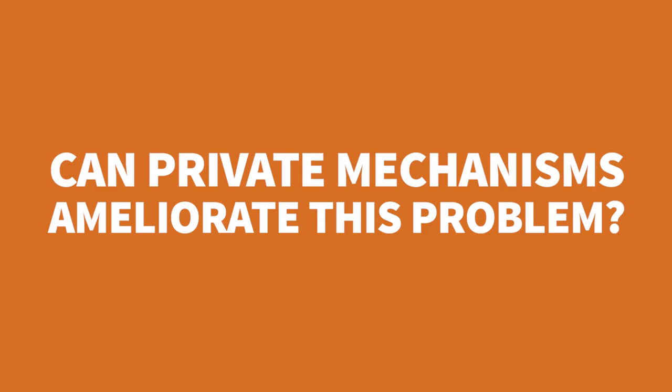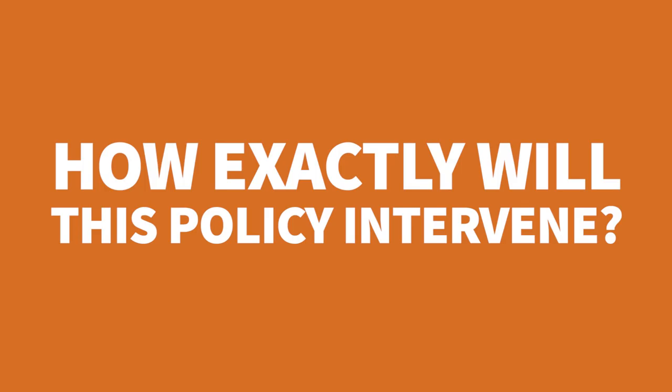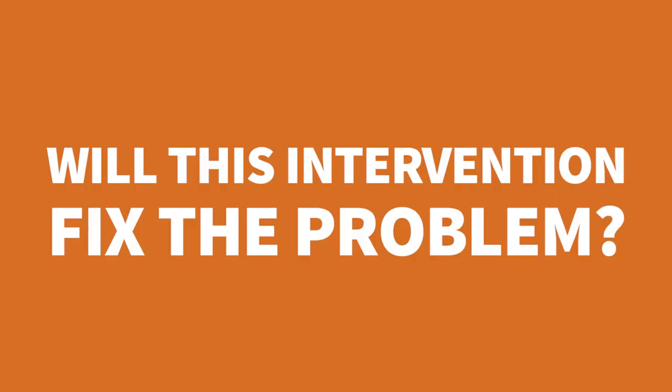We should ask whether private mechanisms — markets and other private responses — can ameliorate the problem, or whether they might evolve over time. We should ask exactly how policy would intervene, since there's a broad range of ways to address any alleged problem. For example, if you think private drug use is a problem, you could consider prohibition, a sin tax, or public media campaigns — each with very different combinations of pros and cons. We should also ask whether the intervention will actually reduce the problem in question. Does raising the minimum legal drinking age from 18 to 21 actually reduce traffic fatalities, or do teenagers in that age range obtain alcohol anyway?